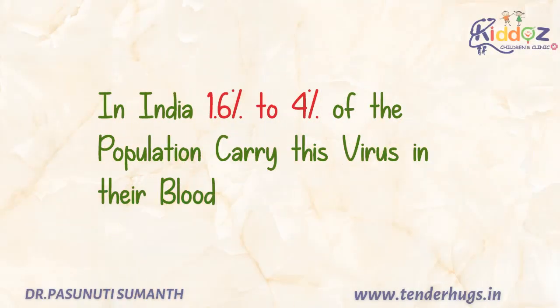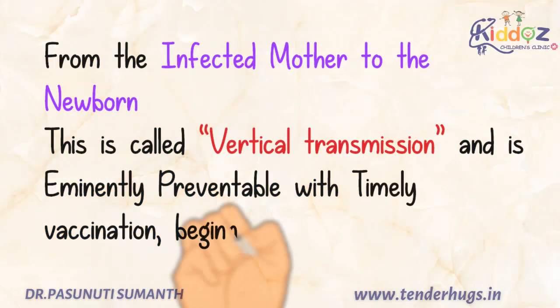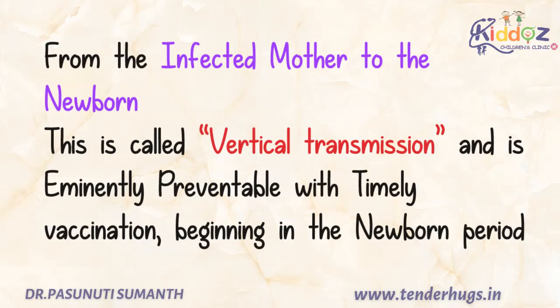Coming to India, statistics show 1.6 to 4% of the whole population carry this virus in their blood. Hepatitis B has many ways of spreading from one person to another — from infected family members or close contacts by sharing articles like toothbrushes and razors, by sexual spread from an infected partner, and from an infected mother to the newborn baby. This is called vertical transmission and is eminently preventable with timely vaccination beginning in the newborn period.